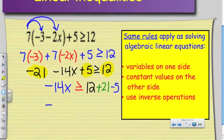So I have negative 14x is greater than or equal to. Can someone tell me what 12 plus 21 minus 5 simplifies to? 28. Very good.